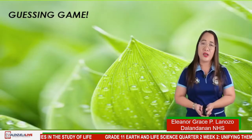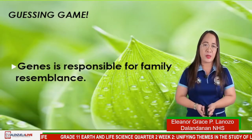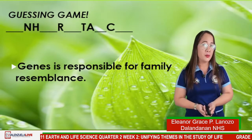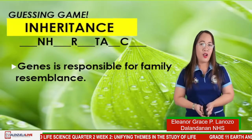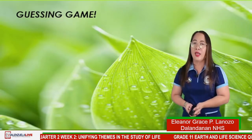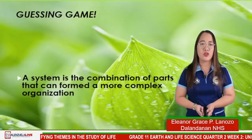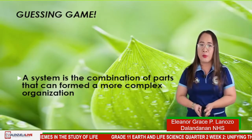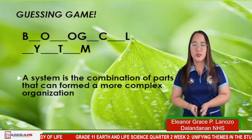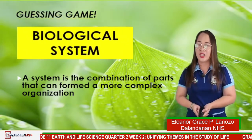And we have here another guessing game: genes are responsible for familiar resemblance — the answer is inheritance. And another: a system is a combination of parts that can form a more complex organization — the answer is biological system.